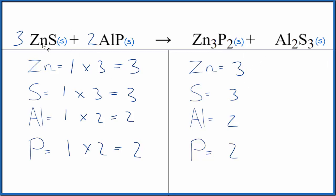This is Dr. Beef, the balanced equation for ZnS plus AlP, and the type of reaction, which is a double displacement. Thanks for watching.